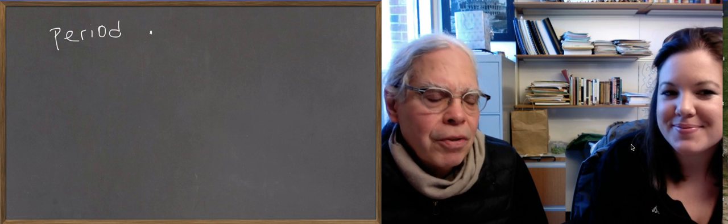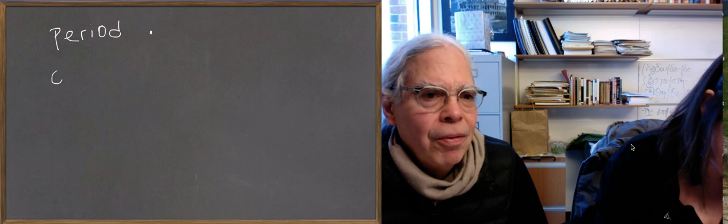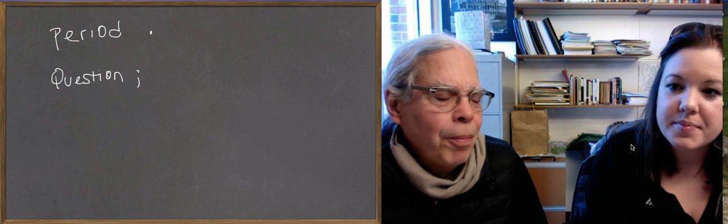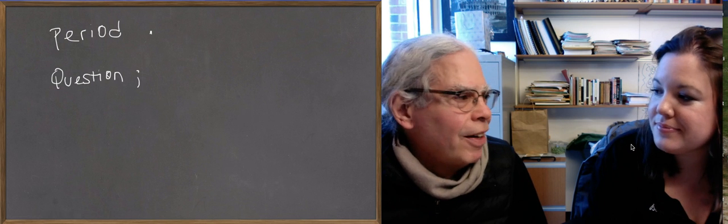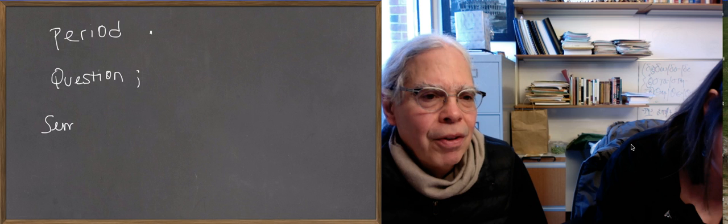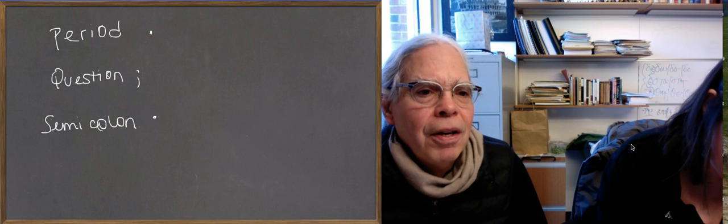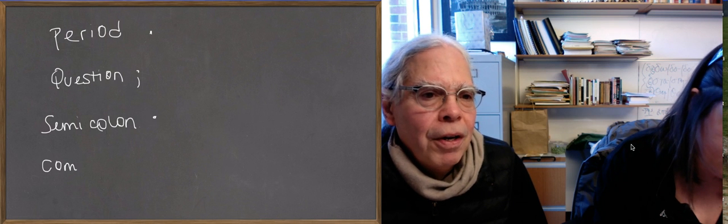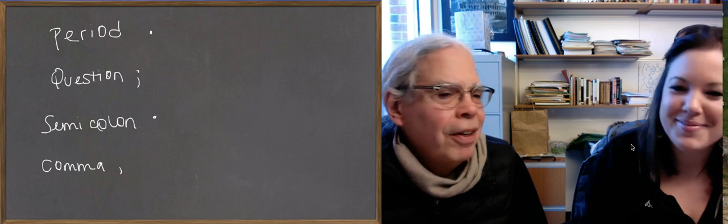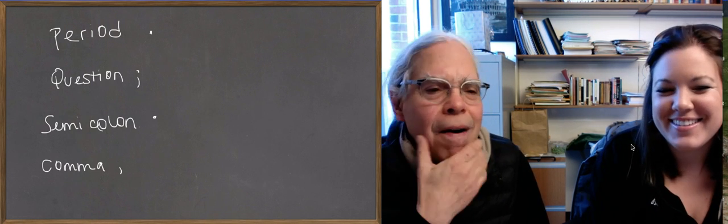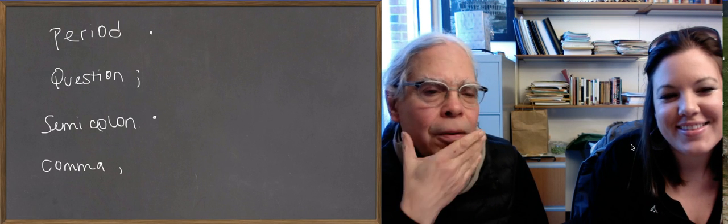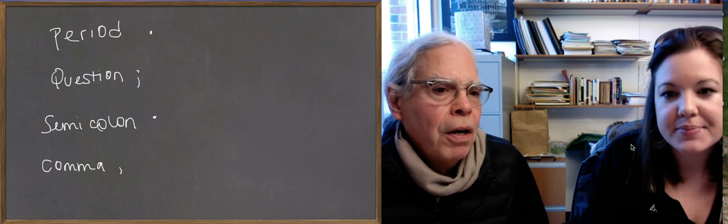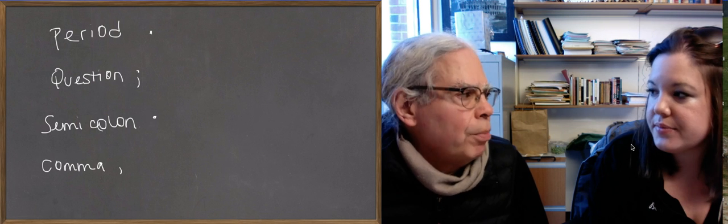There's also a question mark, which looks to us like a semicolon. There's a raised dot, which functions like a semicolon in Greek. And there's a comma — the Greek word for a lock of hair, so it's like a little curly mark. So these are the punctuation marks in Greek. If there's a word with an acute accent and a period, question mark, raised dot, or comma after it, it stays acute. Otherwise, it becomes a grave.